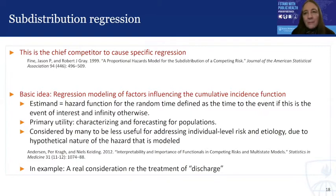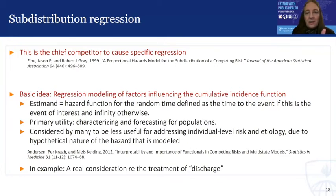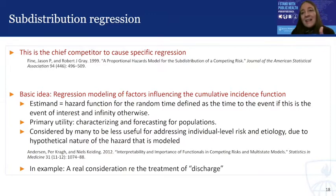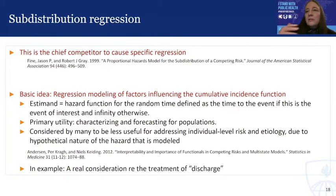For example, imagine that discharge is the competing event and death is the event of interest. For sub-distribution regression, you would basically put all of the discharge times out to infinity so that individuals discharged remain in the risk set for the target event of death. So you can sort of see how that's getting at cumulative incidence — you're interested in incidence overall, whether or not a person was ultimately discharged or not.